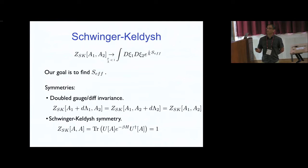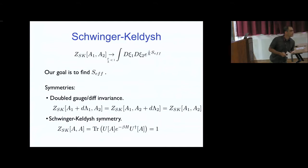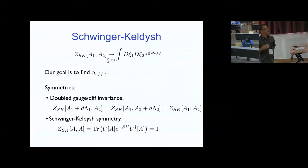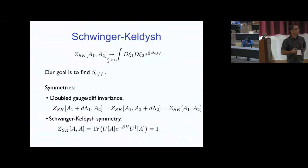The Keldish boundary condition does impose that in the far past the sources be equal (thermal equilibrium) and in the far future the sources are identified. So I allow only initial states which are in thermal equilibrium, then turn on sources to bring the system out of equilibrium, and at the far future make the sources equal — those boundary conditions won't affect this separate gauge invariance.